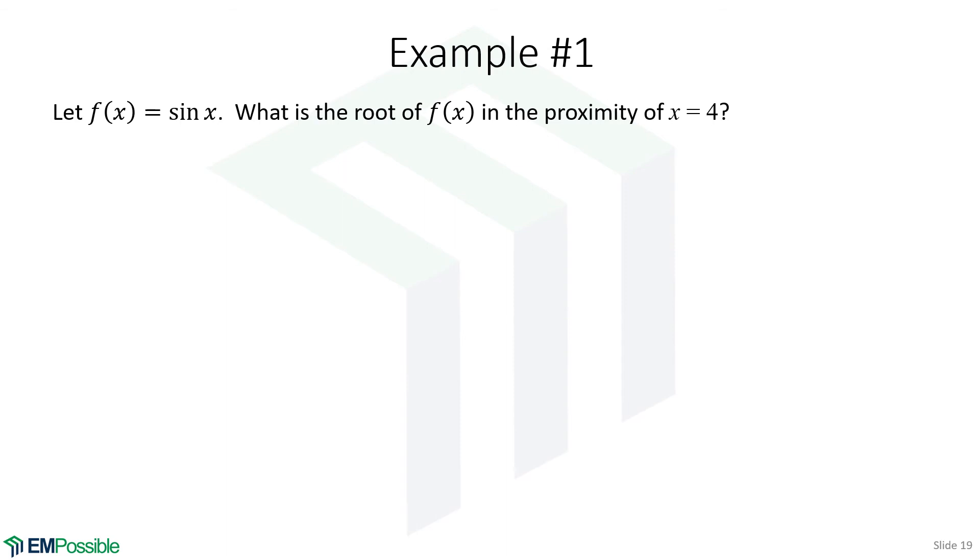Yes, we have a closed form expression, so I really would solve this with the Newton-Raphson method, but let's use this and exercise the secant method. So the first thing is we need two good initial guesses. So let's just pick two numbers close to 4. So I pick 4 and 3.9.